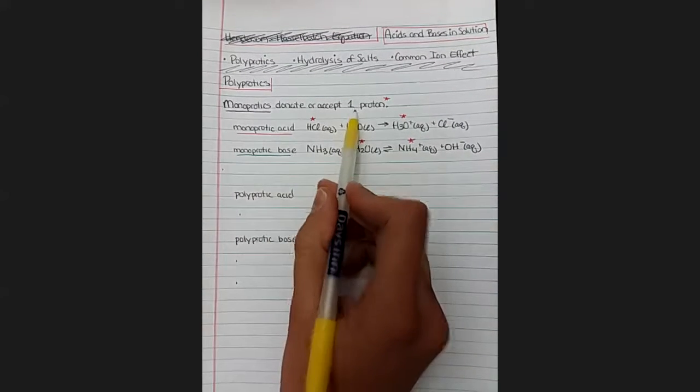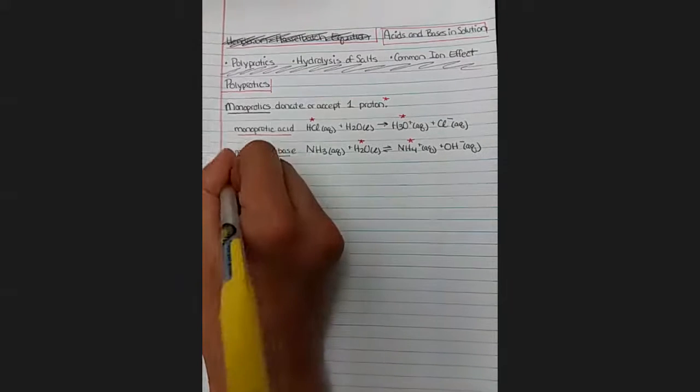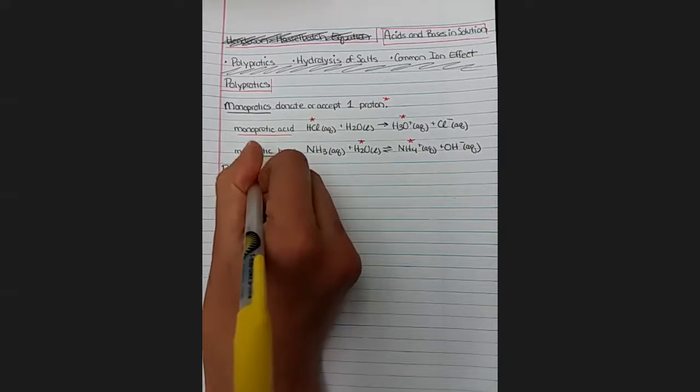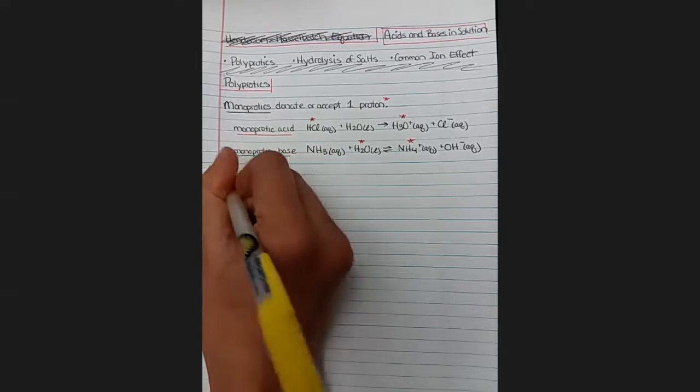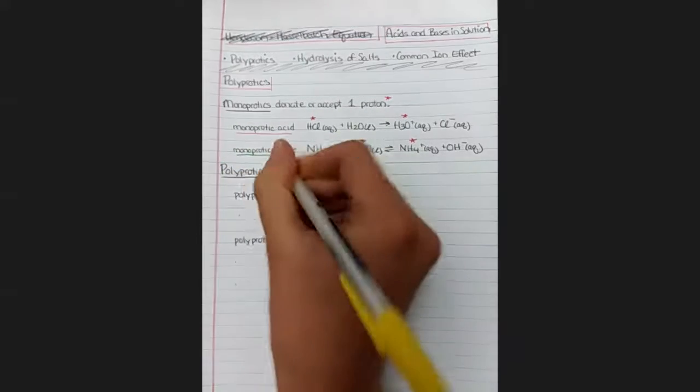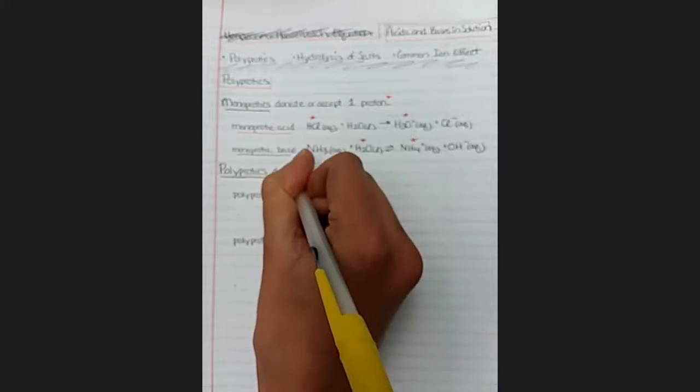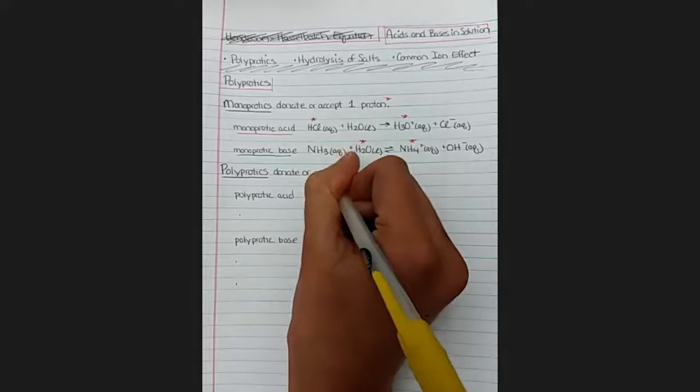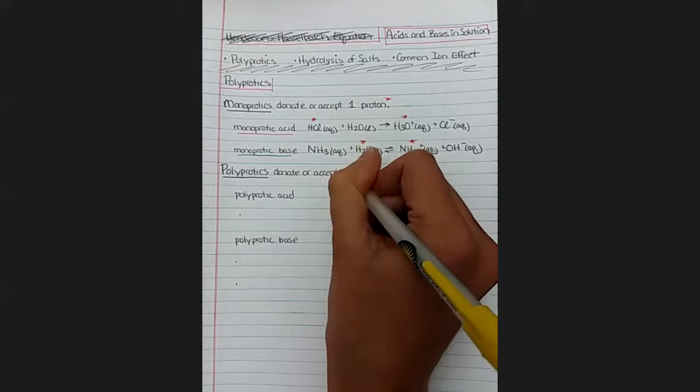So only one proton was exchanged in each of these cases. So this new category that we'll talk about here in brief are called polyprotic. Poly meaning multiple. So these acids and bases donate or accept multiple protons.